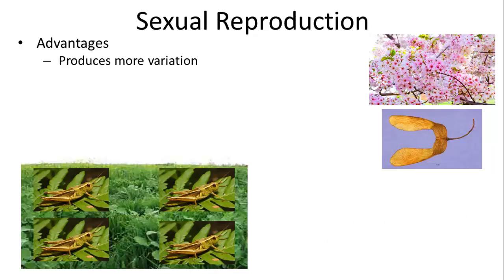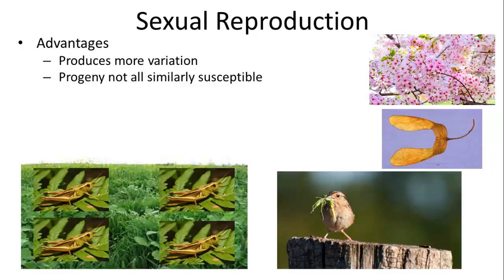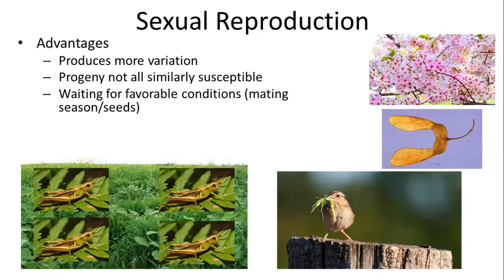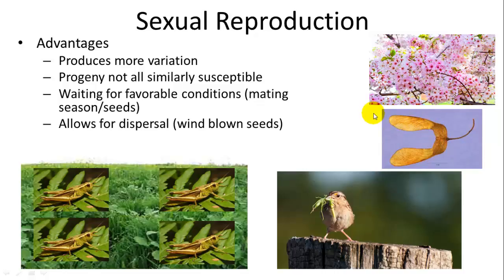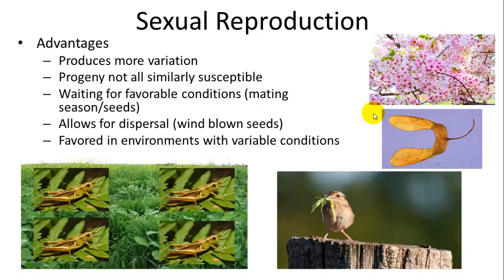Some advantages of sexual reproduction are that it produces more variation. In a variable environment, different variants within your species can inhabit slightly different habitats, and the progeny are not all similarly susceptible to a predator or disease — if a disease comes through, some will survive and be resistant. Sexual reproduction is also generally timed for favorable conditions, such as a mating season or seed production at a specific time of year. This also allows for dispersal — for example, the winged samaras of maple trees allow seeds to disperse further from their parents.